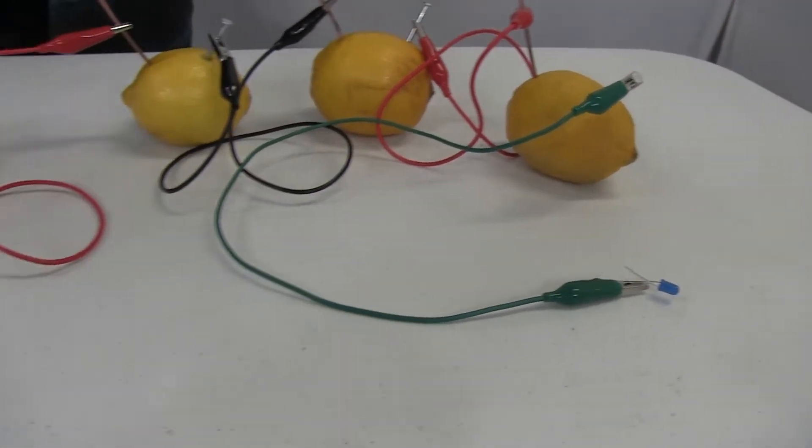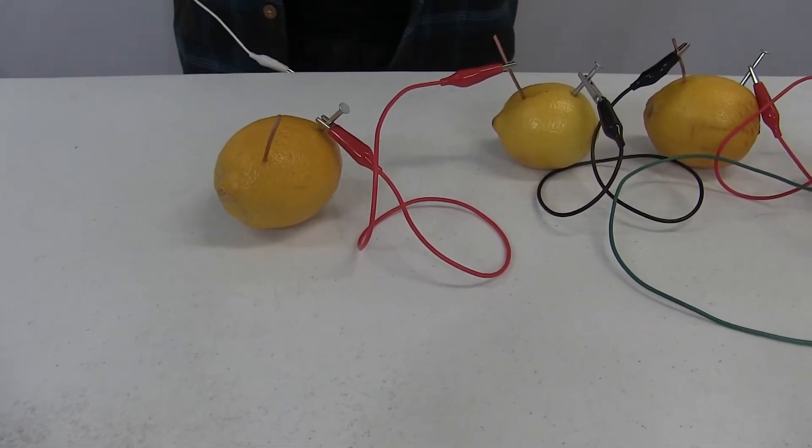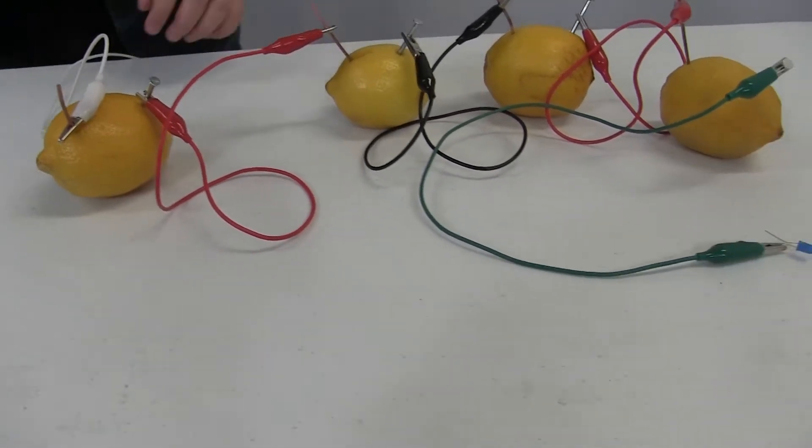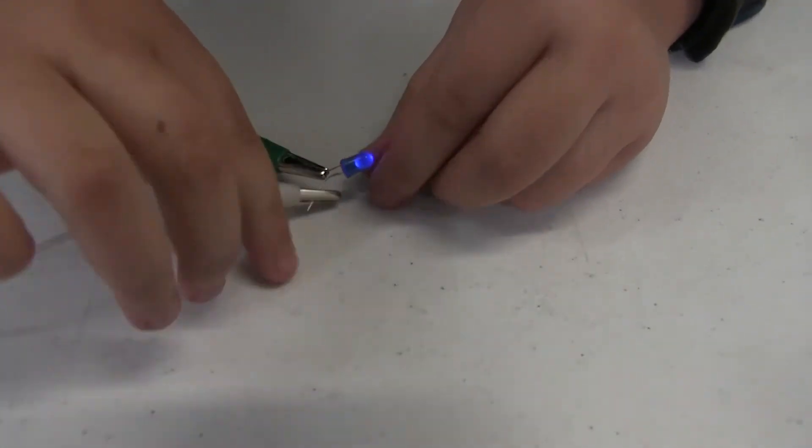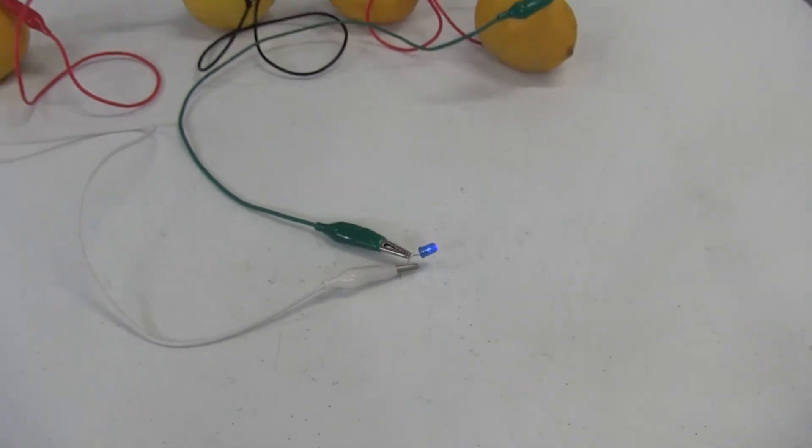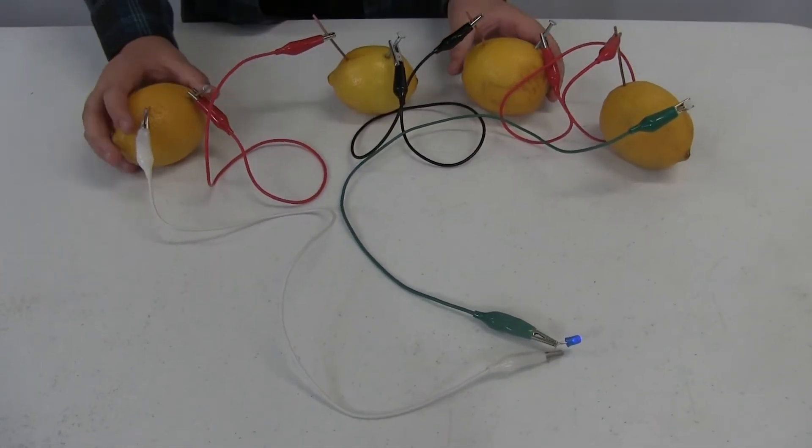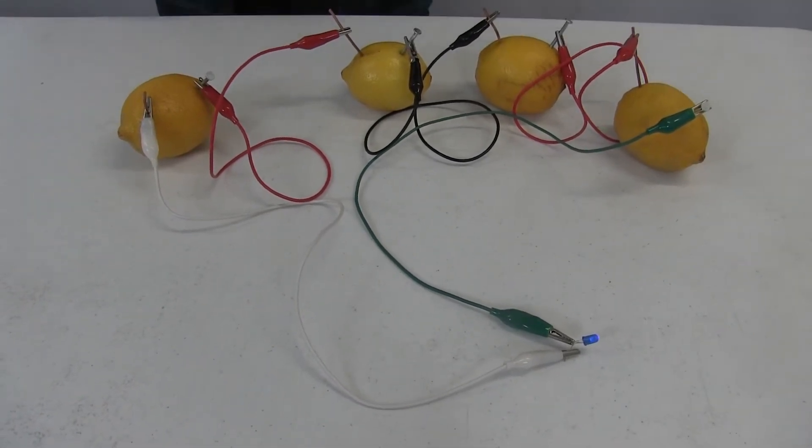That's why there is no light because the circuit is not complete yet. So, now we've got to do it for the other side as well. Put it on to this copper one. Then we put this on to the second one. And there it turns on. Our little LED. So that's how you make your lemon battery source to power up an LED.